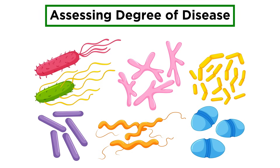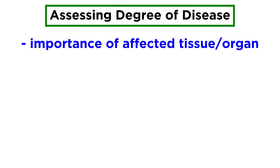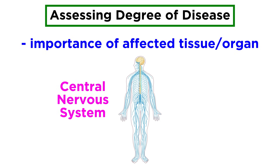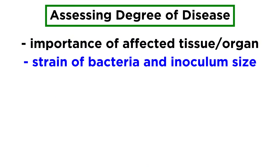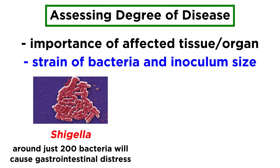The degree of disease that bacteria can cause depends on a few things. For instance, how important is the tissue or organ that's affected? You can imagine that an infection of the central nervous system would be extremely serious, while an infection of your left pinky toe might not be as life-threatening. Another factor is the particular strain of bacteria and how much there is of it, which is called the inoculum size. Some bacteria, like Shigella, which causes food poisoning, require a relatively tiny inoculum size.